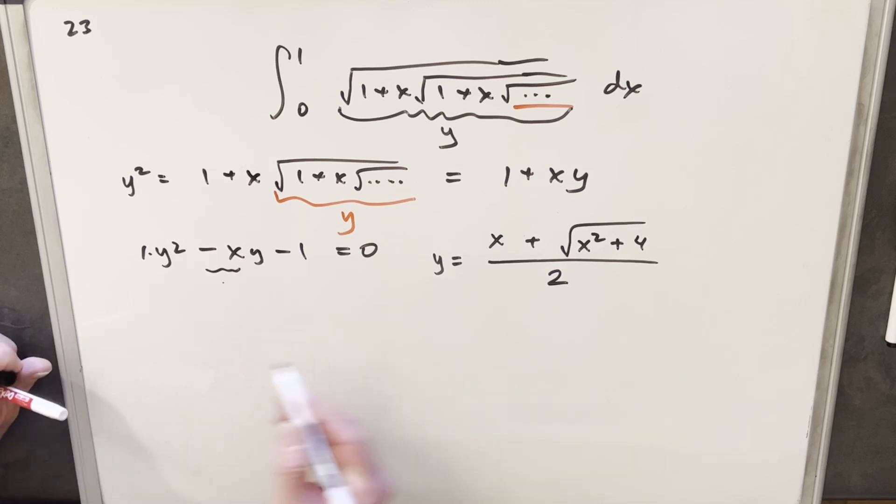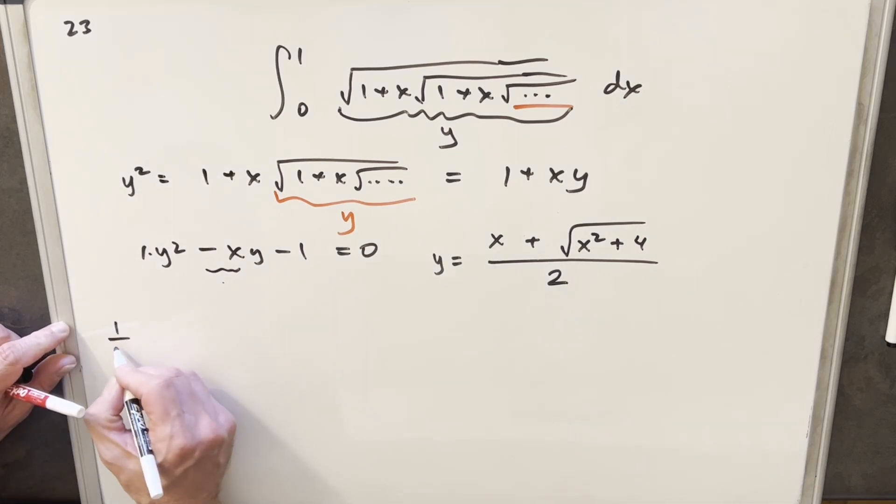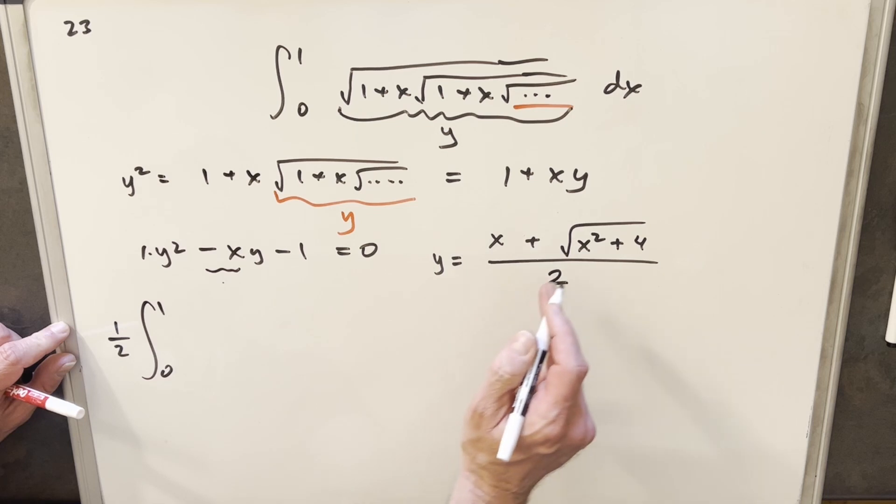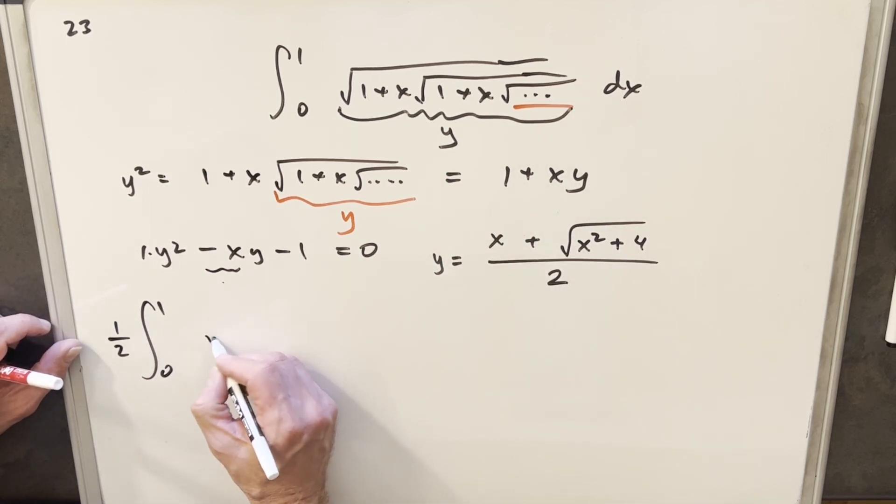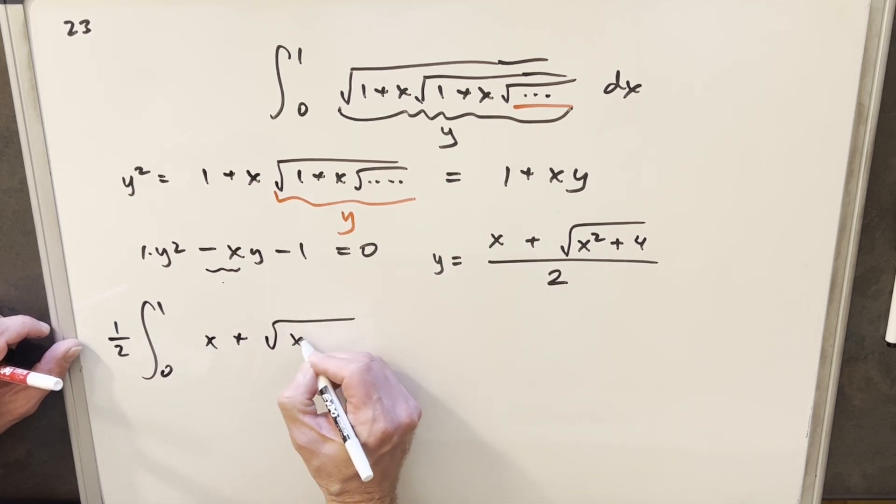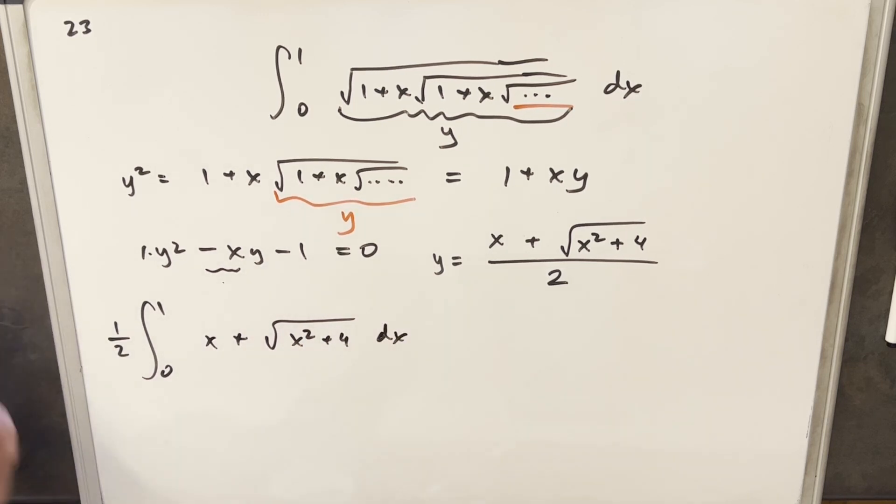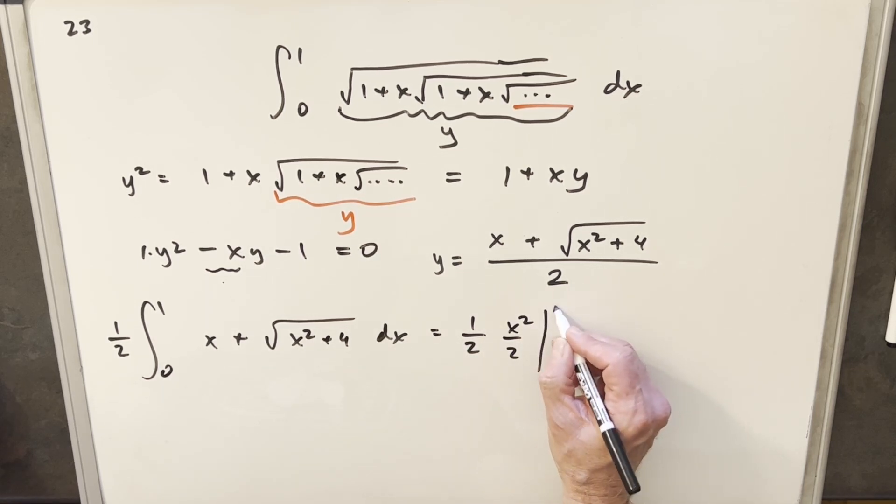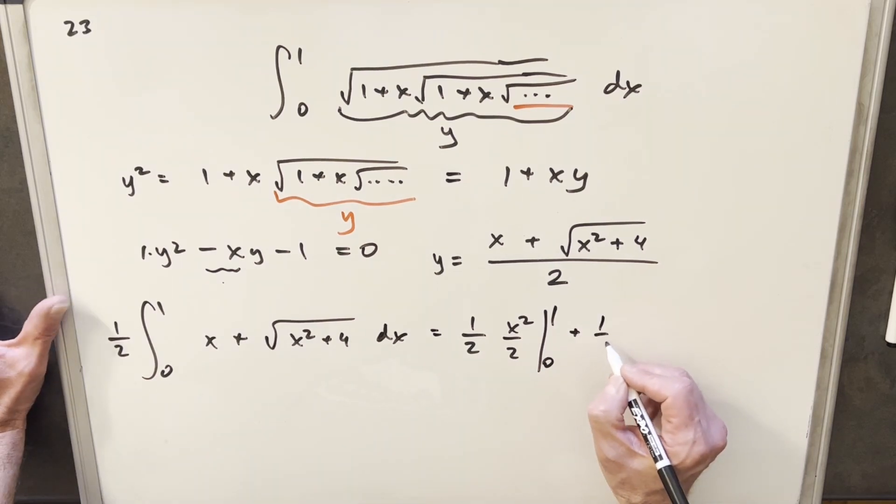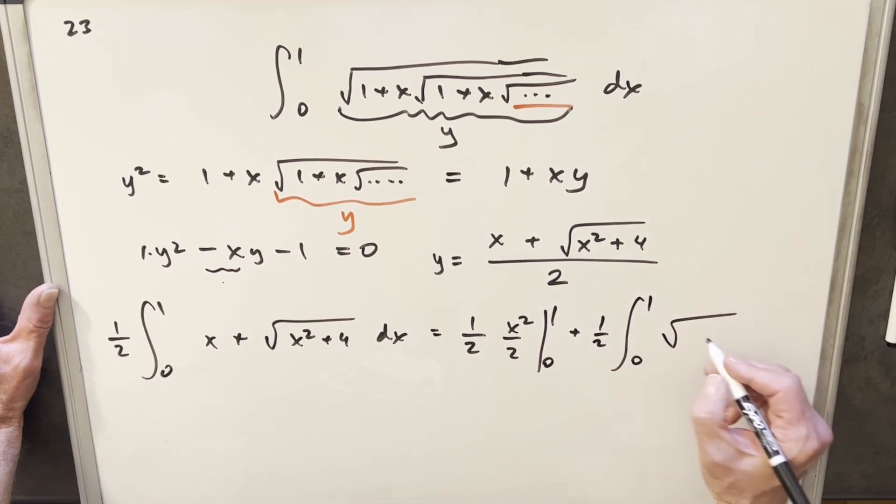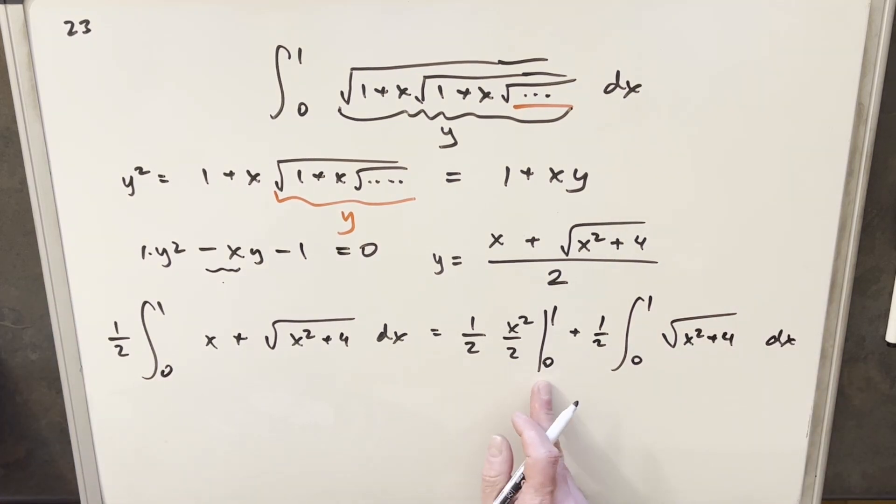From here, I can rewrite our integral. I'm going to take the 2 out front, write that as a half in front of the integral with the same bounds. For y now we're using this thing, so we're going to have x plus square root of x squared plus 4 dx. Integrating the first part's easy, integrating x is just x squared over 2, evaluating that from 0 to 1. The first part's really easy because we plug 0 in and get 0, plug 1 in and get 1 fourth. So the first part is solved.